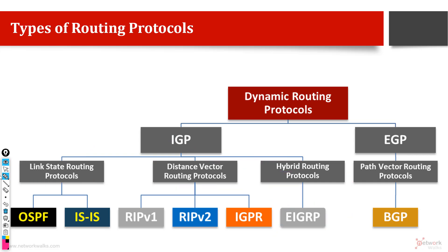So mainly two types of routing protocols exist: link state and distance vector. Link state uses an algorithm called Dijkstra algorithm, while distance vector routing protocols use an algorithm called DUAL. The Dijkstra algorithm calculates paths based on cost.